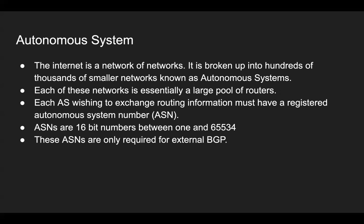On the AWS side of things, they support 16-bit numbers, and these ASNs are only required for external BGP. So whenever you have a set of routers within an autonomous system that would like to interact with another autonomous system's set of routers, they use something called external BGP — border gateway protocol. And whenever routers would like to talk within an autonomous system, they use something called internal BGP, or internal border gateway protocol.